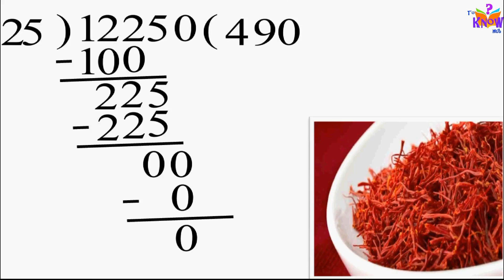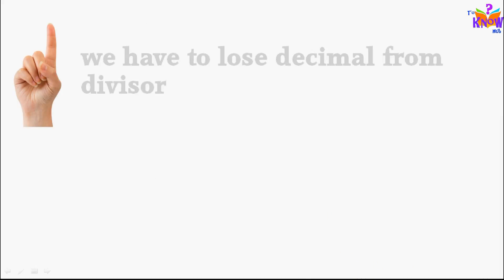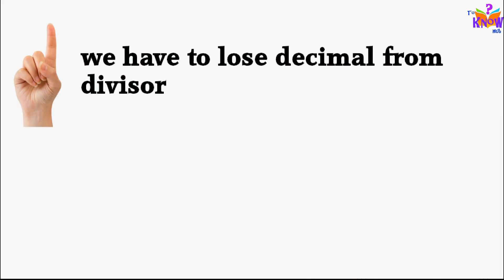So he can make 490 such packs, each having 25 gram, that is 0.025 kg. First lose the decimal from the divisor. For that, move decimal point by equal number of spaces in both numerator and denominator.